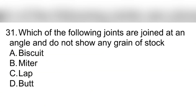Question 31. Which of the following joints are joined at an angle and do not show any grain of stock? A. Biscuit. B. Mitre. C. Lap. D. Butt. Correct answer: B. Mitre.